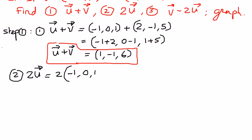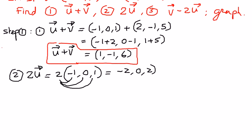Vector u is negative 1, 0, 1. It is just a matter of distributing the 2 to every one of the components in the vector. 2 times negative 1 is negative 2, 2 times 0 is 0, and 2 times 1 is 2. So that is how we look at the multiplication of a scalar 2 to a vector.